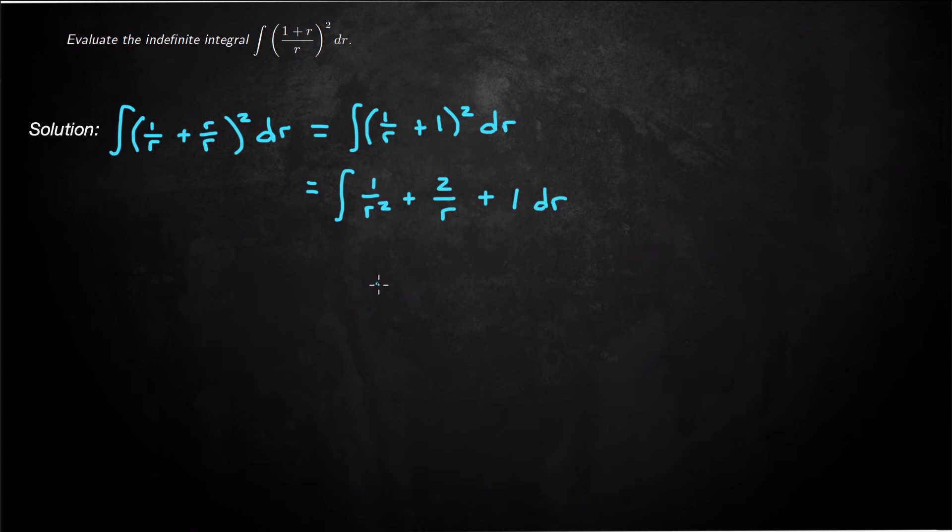For each one of these, probably the first thing we need to do is change the first one to be r to the negative 2, so you can use the power law on that, and then plus 2 over r plus 1 dr.